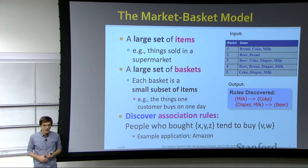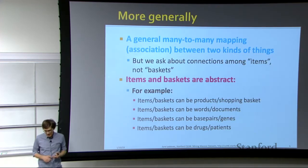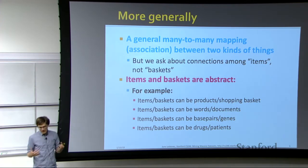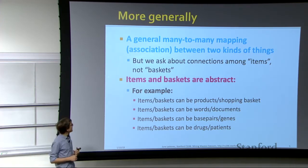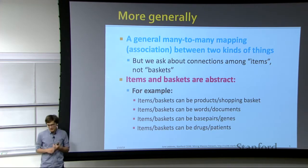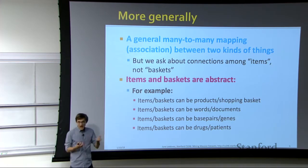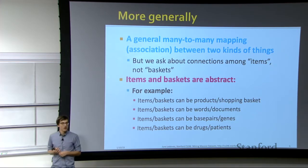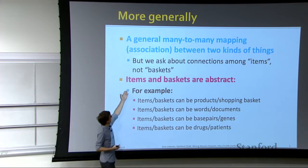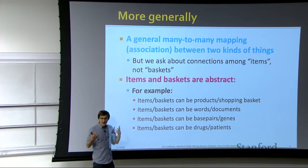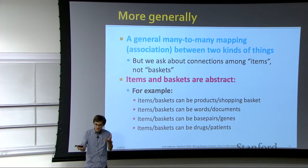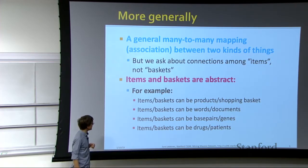We'll talk about how to do this on large data in a scalable way. More generally, we have a many-to-many mapping between two kinds of things, and we are asking for connections between items that belong to baskets. Items and baskets are abstract, so you can map many different domains into this framework.